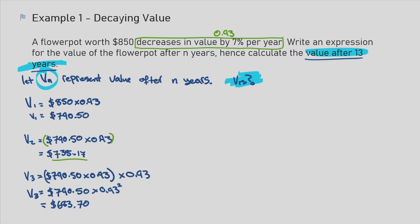And we can see here something emerging. We can see that we've got a common ratio of 0.93 and the first term, at least I'm gonna write it, is V₁ = $790.50. So then that means that Vₙ equals the first term multiplied by the common ratio to the power of n minus 1.